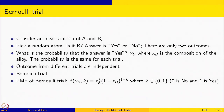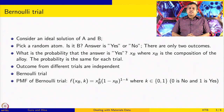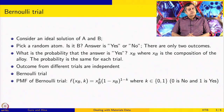Let us consider an ideal solution of A and B, or a random solid solution of A and B. If you pick a random atom and ask the question: is it B? Then the answer is either yes or no — there are only two outcomes. If you are looking for B atoms and you find one, that outcome is a success; if you do not, it is a failure.